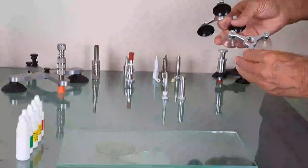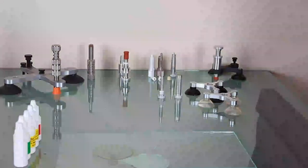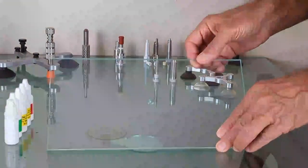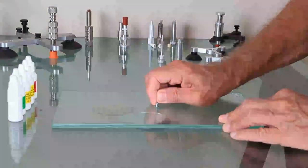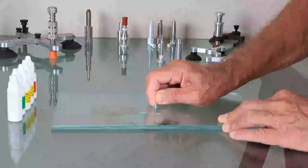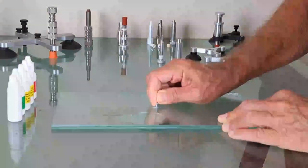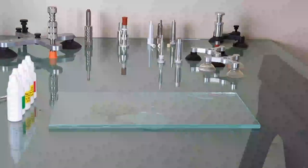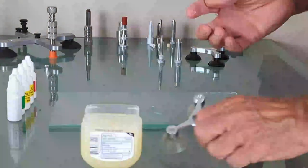These suction cups are made out of vinyl. We have here a star break and we first scrape the impact point, get the little pieces of glass out of there, and then brush that off.